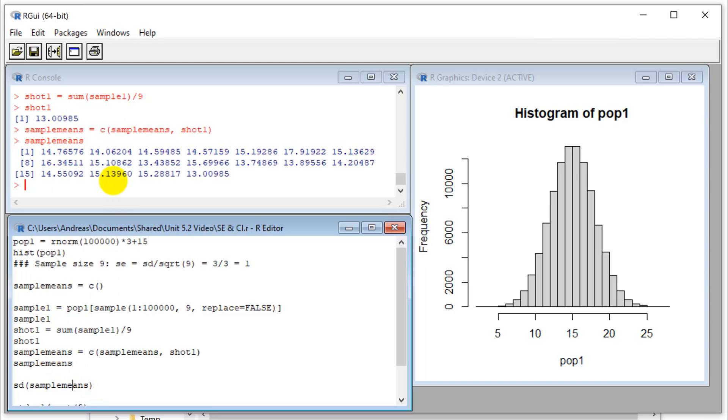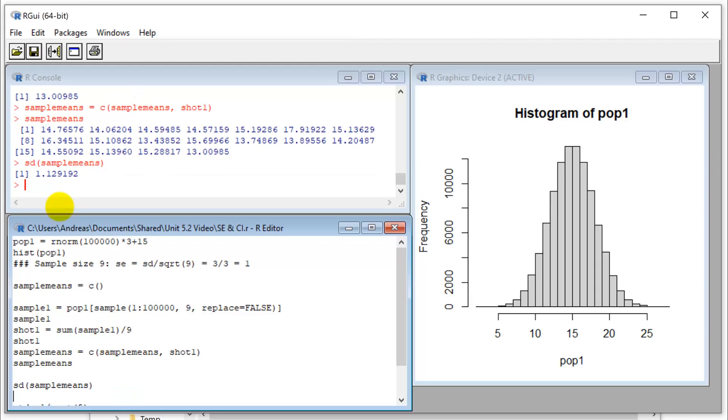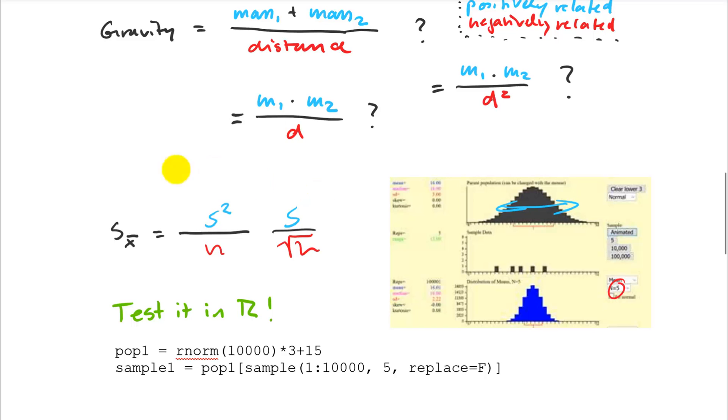So maybe that's enough. So we could just now look at the distribution of my sample means. And it is 1.13. So close to one. So this is what we want. So this formula does work.